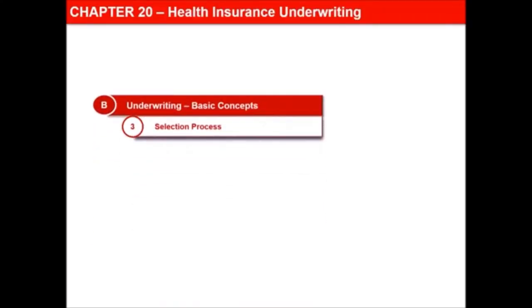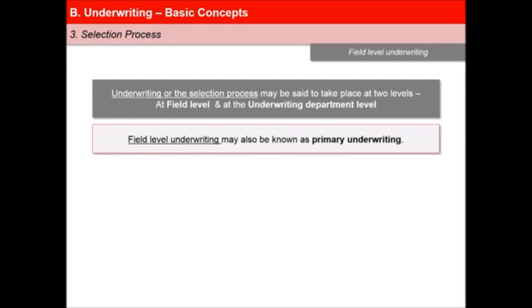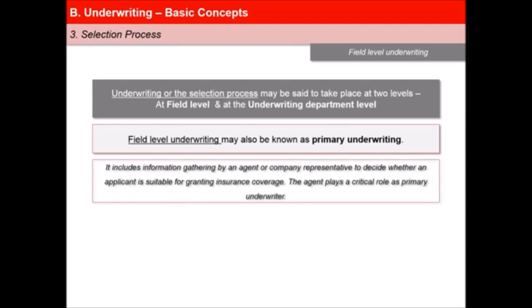In this next video of the lesson, Health Insurance Underwriting, we will learn about the selection process of underwriting. Underwriting or the selection process may be said to take place at two levels: first, at field level, and second, at underwriting department level. Field level underwriting may also be known as primary underwriting. It includes information gathering by an agent or company representative to decide whether an applicant is suitable for granting insurance coverage or not.